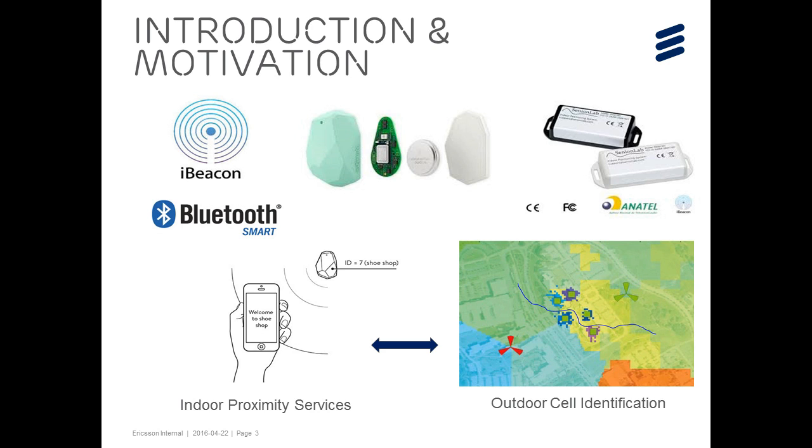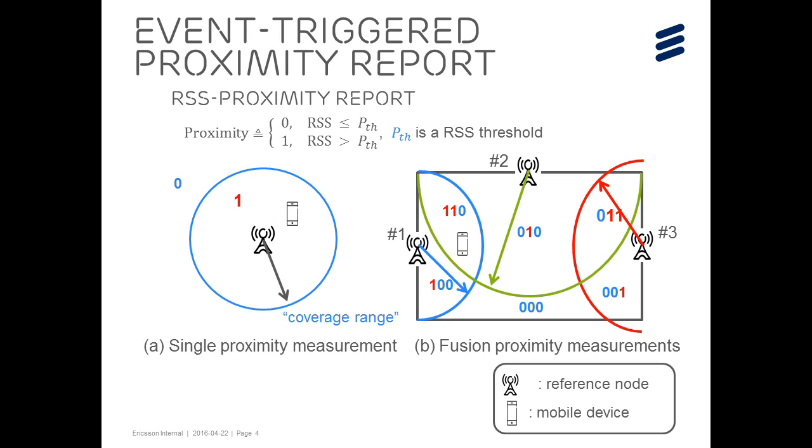For instance, there have been growing interest in the indoor proximity services, which is similar to the outdoor cell identification as shown at the bottom of this slide. To be more precise, the event-triggered proximity report is obtained by comparing the measured received signal strength value with the preselected threshold.